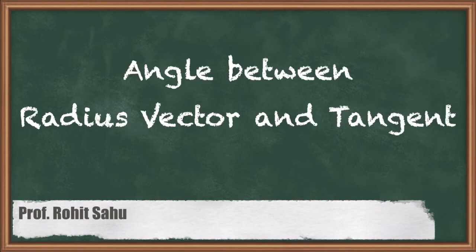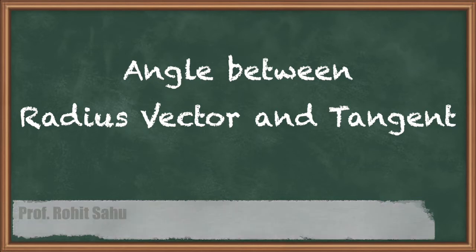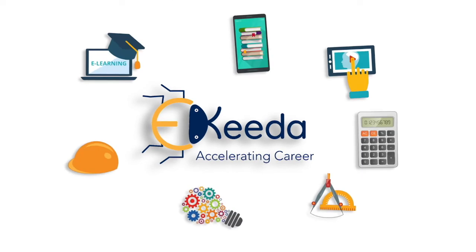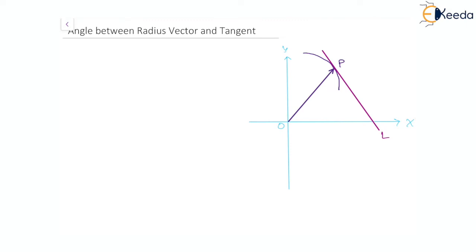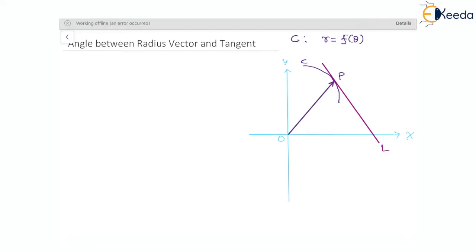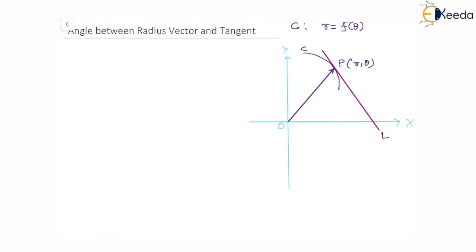In this topic we are going to discuss the angle between the radius vector and tangent. We have a plane with the x-axis and y-axis. P is a point on the curve C, which is a polar curve, so C is given by R equal to a function of theta. In polar coordinates, P is written as (R, θ), and the line OP makes an angle θ with the x-axis, so angle XOP equals θ.